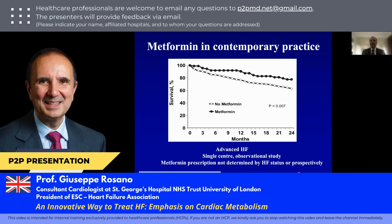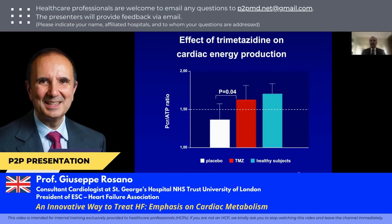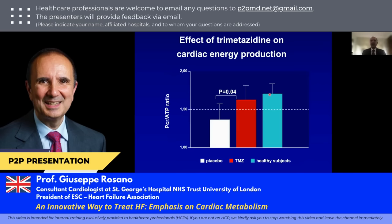Metformin has been shown to be safe in patients with heart failure. Although we don't have a single trial that looked at the effect of metformin in patients with heart failure, registry studies have shown that patients taking metformin have better survival. On the other hand, we have very sound and strong data with trimetazidine. A study by Gabriele Fragasso looked at the phosphocreatine-to-ATP ratio and found that patients who received trimetazidine had a normalization of that ratio, similar to that of healthy subjects.